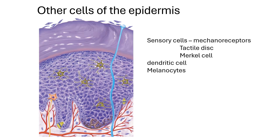There are many other types of cells that exist in the epidermis. Although we say that the epidermis is generally not innervated — meaning there are no nerve fibers present — there are some sensory cells. However, the nerve fiber connecting them to the brain is not located in the epidermis, and this is what allows us to say that it is not innervated.